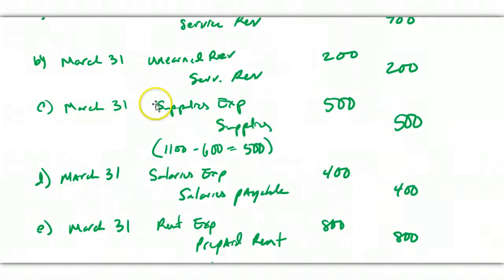So my adjusting entry, debit supplies expense, credit supplies, is going to be for $500. It's the difference between what I show in the ledger and what I actually have on hand. That is the amount that has been used.